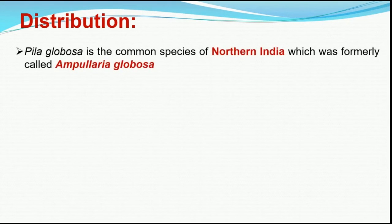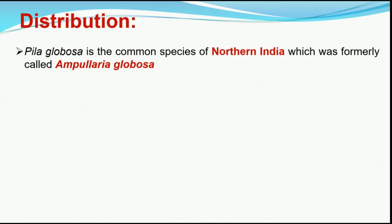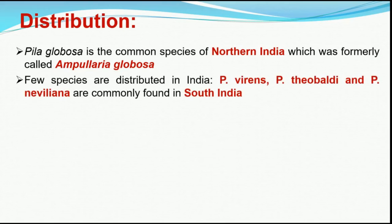Now we move on to the Distribution of Pila or apple snail. Pila globosa is the common species of northern India, formerly called Ampullaria globosa. The previous name was later replaced by the newer name Pila globosa. A few species are distributed in India — Pila virens, Pila tholbaldi, and Pila naveliana are found in southern India — but Pila globosa is found only in northern India.